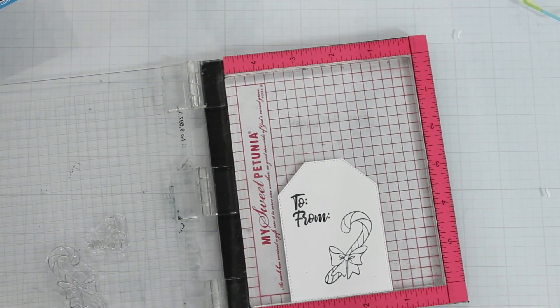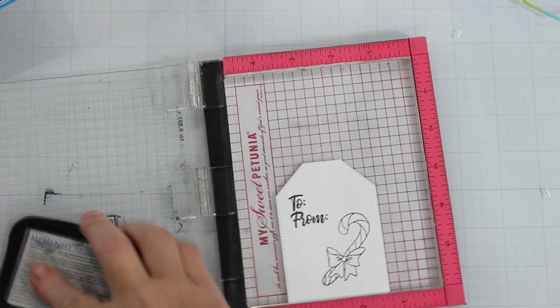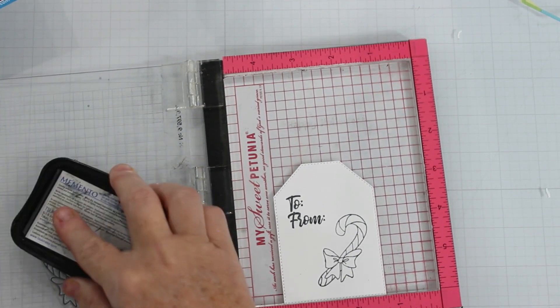I like a really dark crisp line so I did choose to stamp this twice but you could leave that step out of the process if you wish.